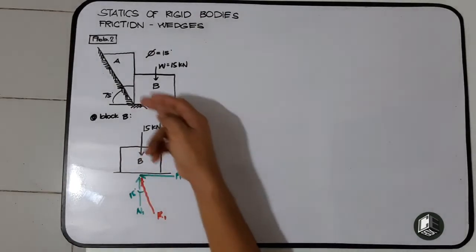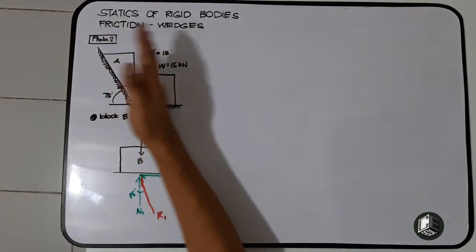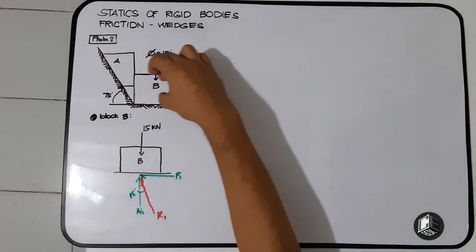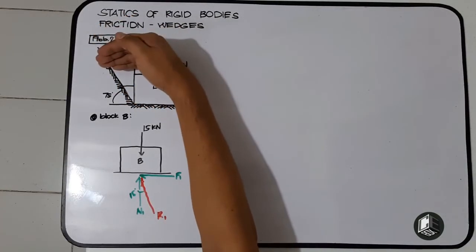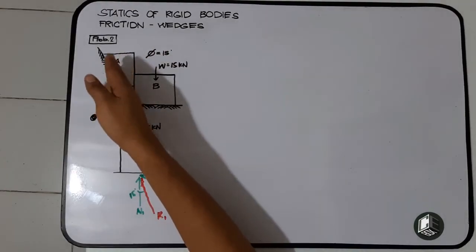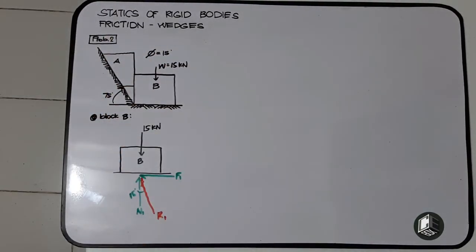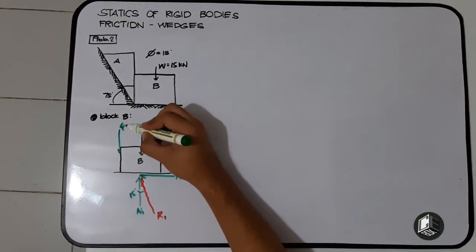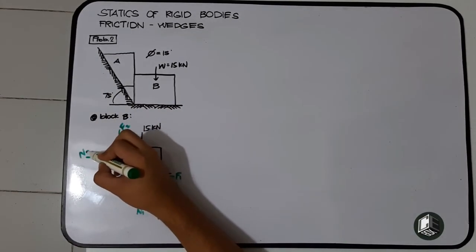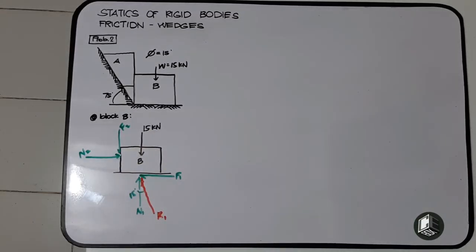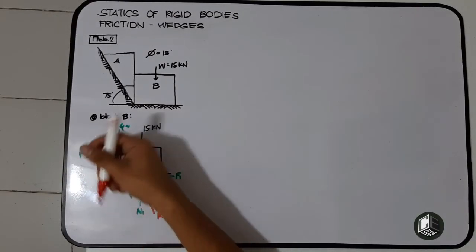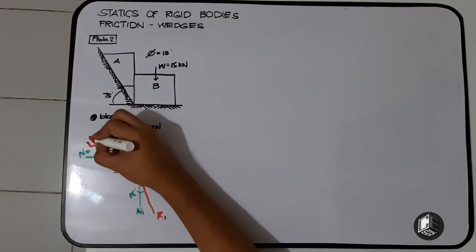Dito naman sa between A and B, kung maalala natin, ang movement natin is to the right. So mangyayari niyan, yung ating block A is pababa at atutulak yung ating block B papunta sa right. Kung ating block A is pababa, ibig sabihin ang frictional force natin dito between A and B is upward. Pagpunta natin sa block B, magiging na siyang downward. Ito yung ating frictional force 2. At ito naman yung ating normal force 2. So ngayon ito yung ating 15 degrees with normal force. At ito yung ating reaction 2.